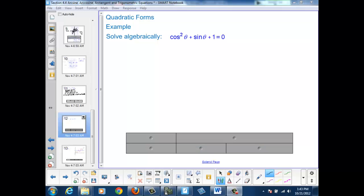Here's another example. Here we're going to find multiple solutions because we're in a quadratic form. So we want to solve algebraically this expression cosine squared theta plus sine theta plus 1 equals 0.